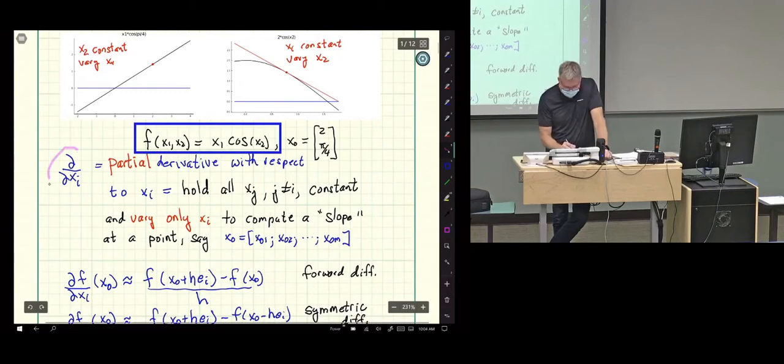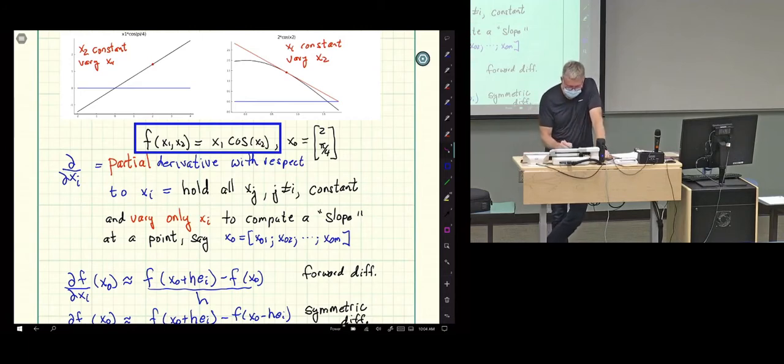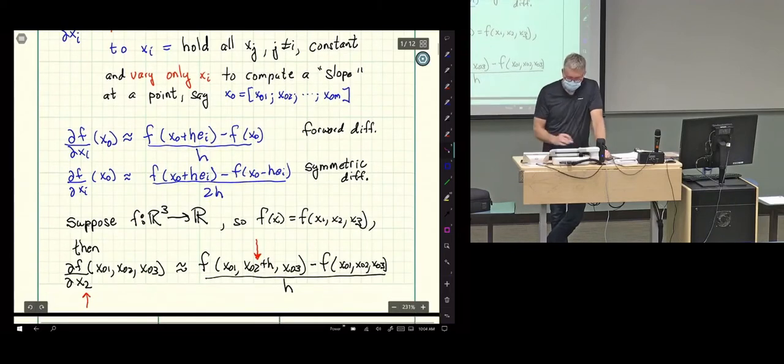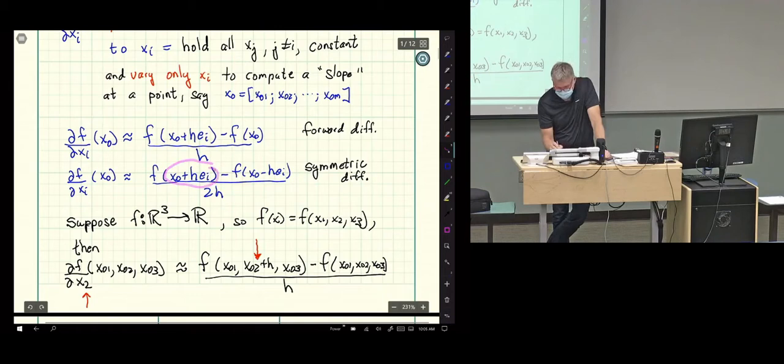And the fancy notation from calculus is this partial symbol. And we indicate which variable we are varying by putting it in the denominator. And these give us different ways to do the approximation. We can do a forward difference, perturbing the ith component. We can do a backwards by moving the h with a minus. And then we have the symmetric difference when we perturb forwards and backwards.